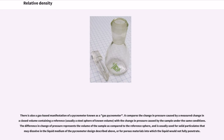There is also a gas-based manifestation known as a gas pycnometer. It compares the change in pressure caused by a measured change in a closed volume containing a reference (usually a steel sphere of known volume) with a change in pressure caused by the sample under the same conditions. The difference in change of pressure represents the volume of the sample compared to the reference sphere. It is usually used for solid particulates that may dissolve in the liquid medium of the standard pycnometer, or for porous materials into which the liquid would not fully penetrate.